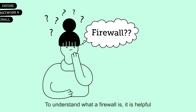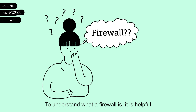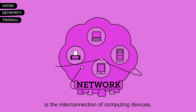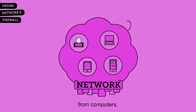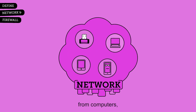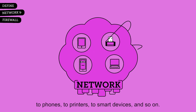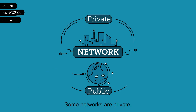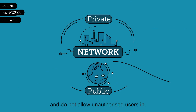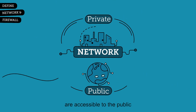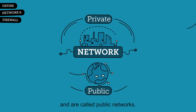To understand what a firewall is, it is helpful to first be familiar with what a network is. A network is the interconnection of computing devices, from computers to phones to printers to smart devices and so on. Some networks are private and do not allow unauthorized users in. Some, like the internet, are accessible to the public and are called public networks.